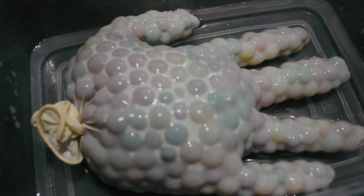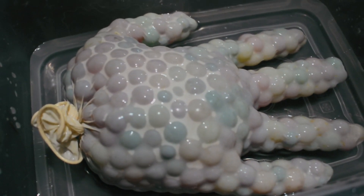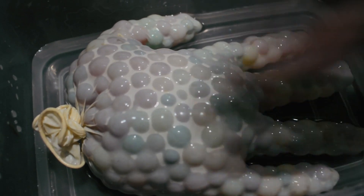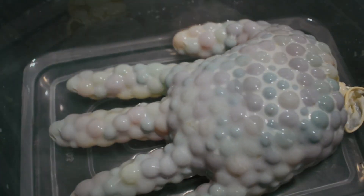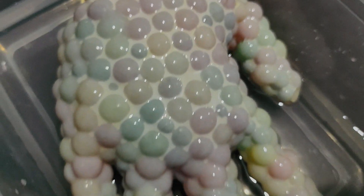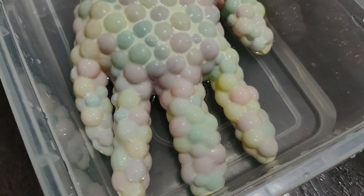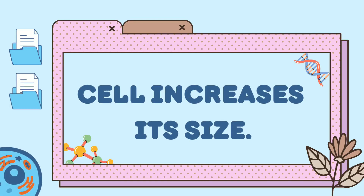Check it after four hours and you will notice that the appearance of the glove becomes different and the Orbeez balls are larger. The Orbeez balls are a good representation of a cell, and here we have proven that cells increase in size and get bigger.